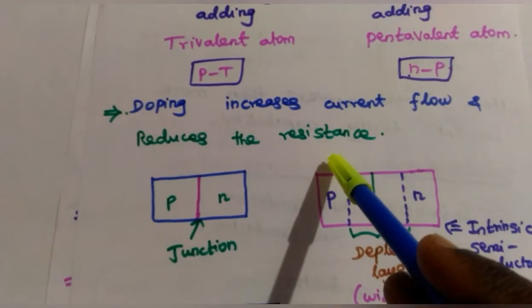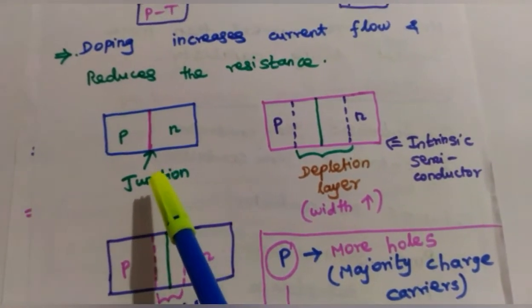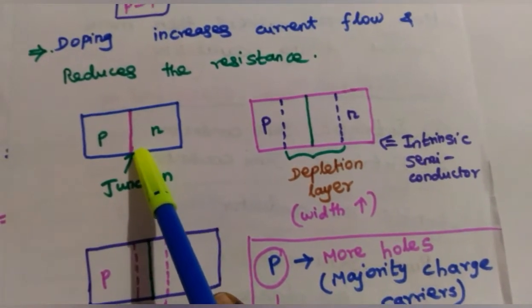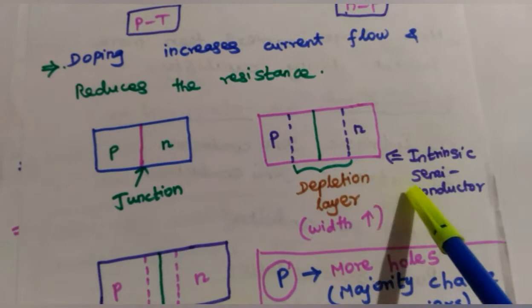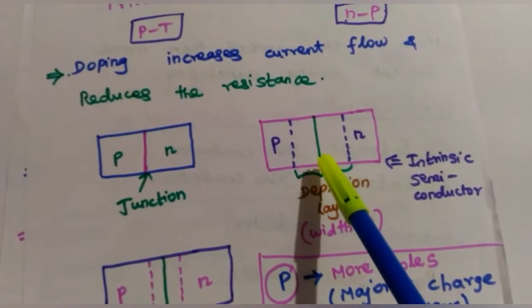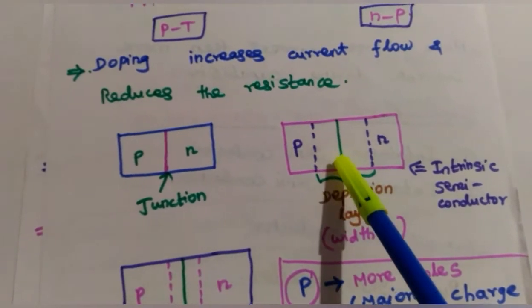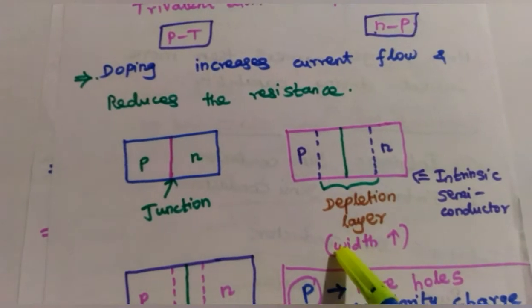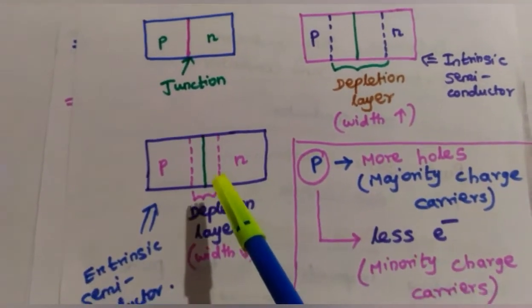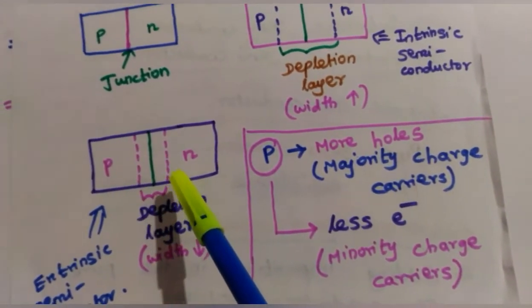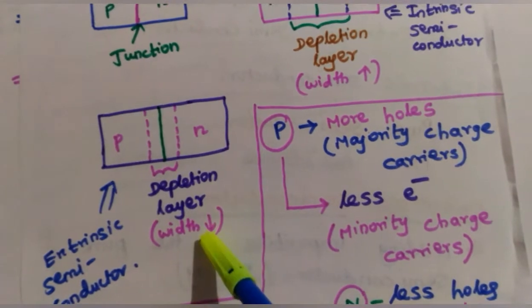Consider a P-N junction where P and N layers are combined together to form one junction. Without adding impurities, it is an intrinsic semiconductor, and the width of the depletion layer is more. The depletion layer contains stationary ions, so resistance is more and current is very low. If the P and N layers are doped by adding trivalent and pentavalent atoms, it acts as an extrinsic semiconductor and the width of the depletion layer is reduced.